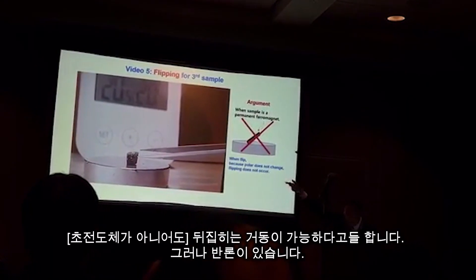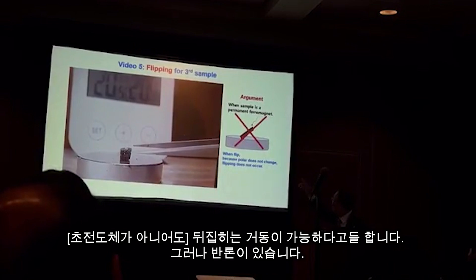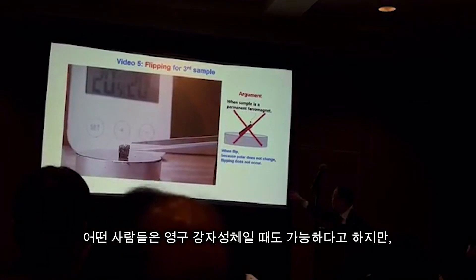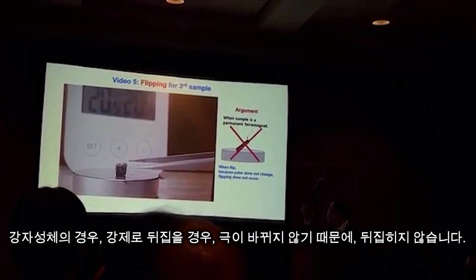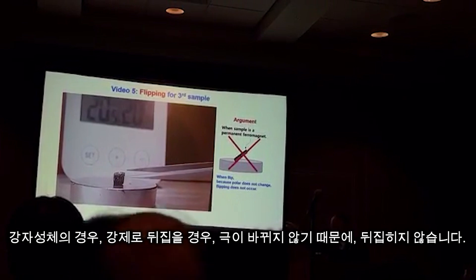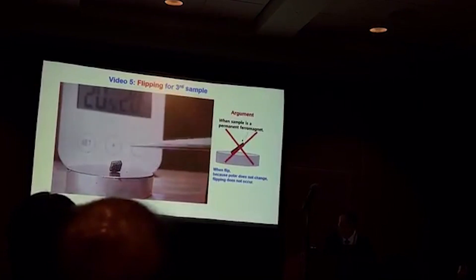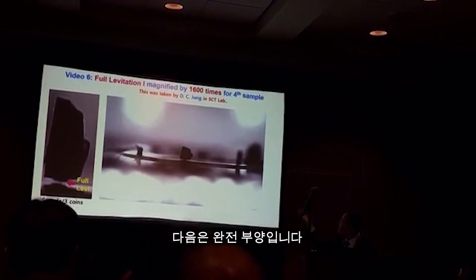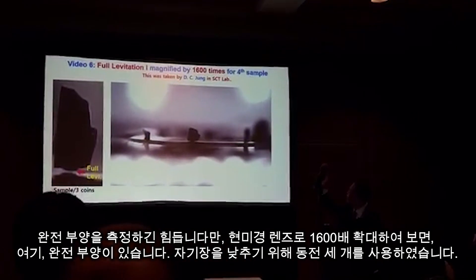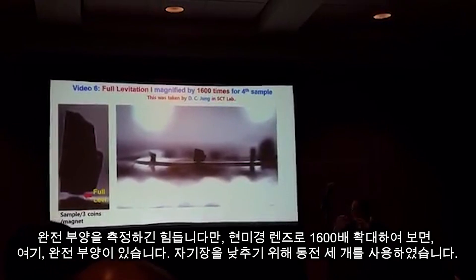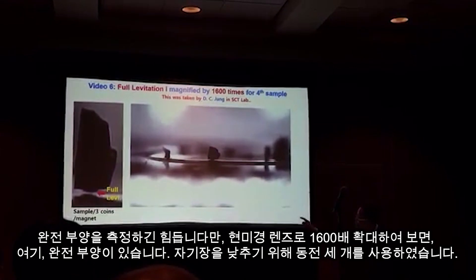This is flipping — it is possible. However, there is an argument. Some people say the central is permanent. However, when the polar doesn't change, in this case flipping has to occur. It is a full length. It is so difficult to measure the full length.